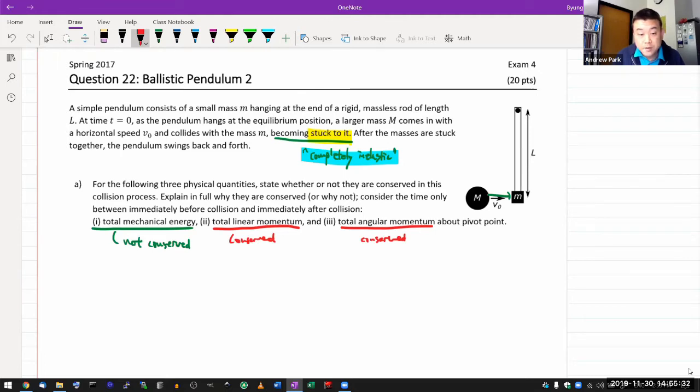And both of them are conserved for same or similar reason. Total linear momentum is conserved because net external force is equal to zero. So when you look at this collision process, through the free body diagram of these two masses, by the way, I am going to say gravity is negligible, because, well,